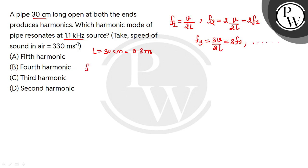Now let's see the F1 value. F1 equals 330 divided by 2 into 0.3.